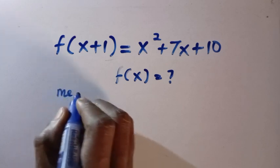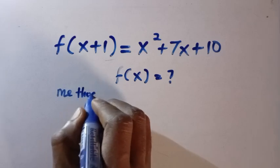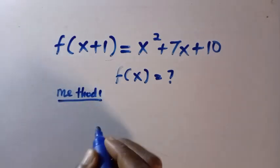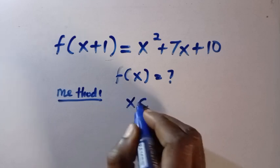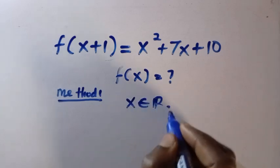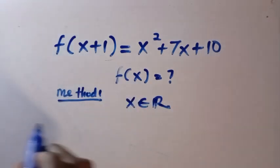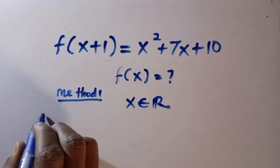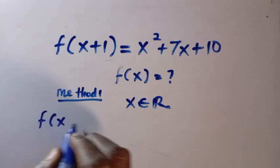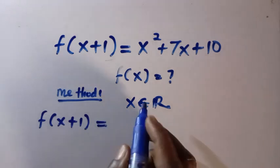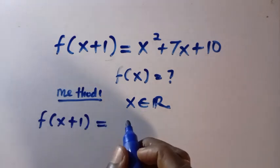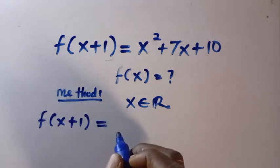So let's see method 1. From here, we must know that the value of x here is a member of real number. Then we consider f of x plus 1. This equals x squared plus 7x plus 10 is a quadratic.